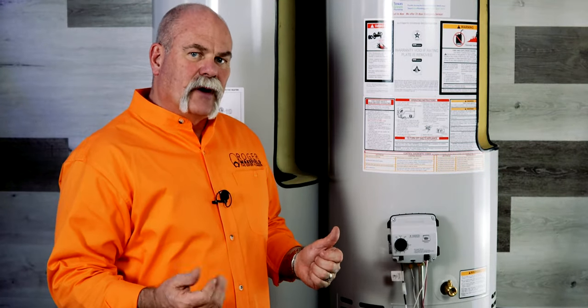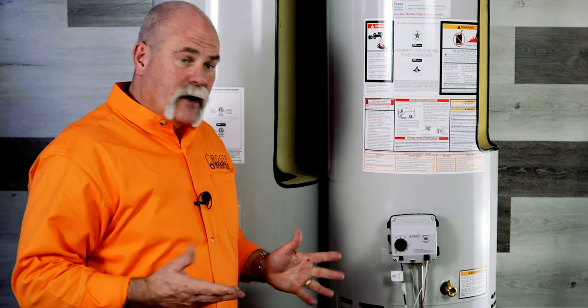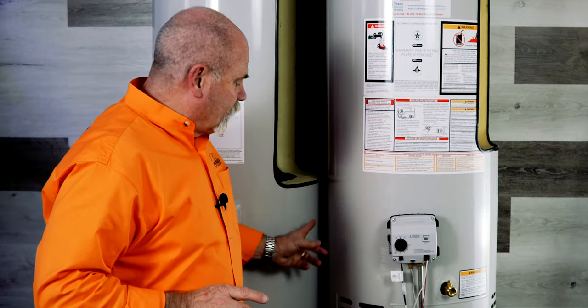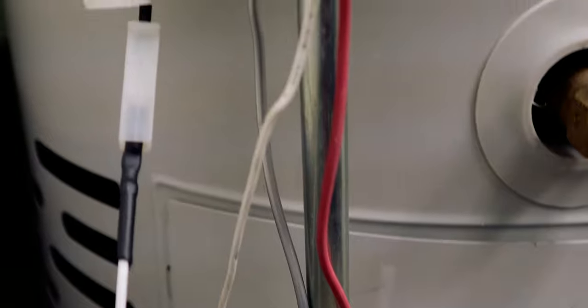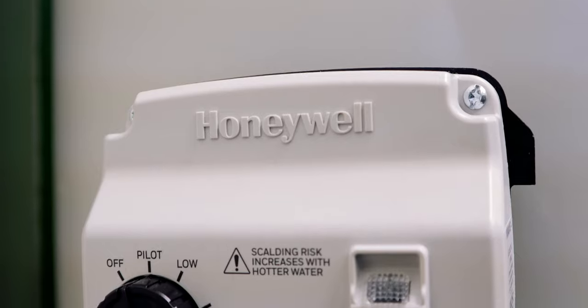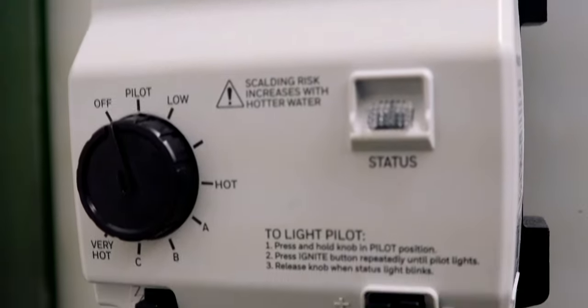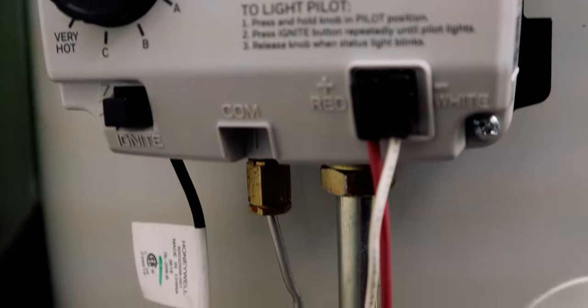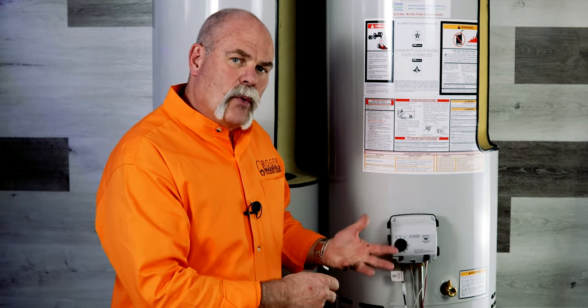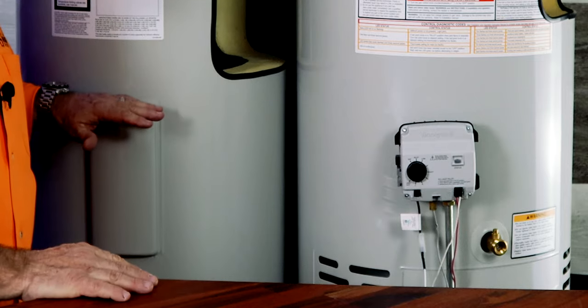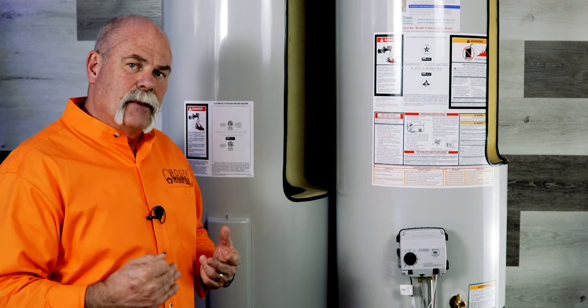The easiest way to tell if you have a gas or electric water heater is by looking at the front. This is a gas control valve with a gas line coming out of the wall into the side. This valve is really your thermostat - it has a piece inside the tank that checks the temperature and controls the gas and flame. If you have a gas or electric water heater, it's easy to tell by looking at the front for the gas control valve.